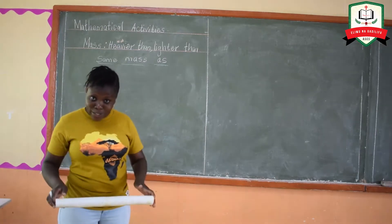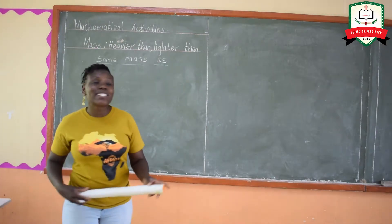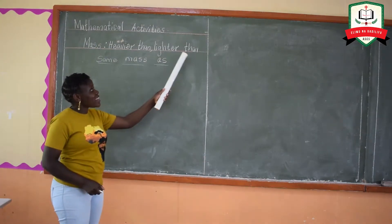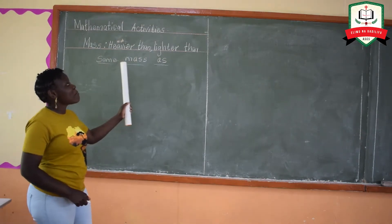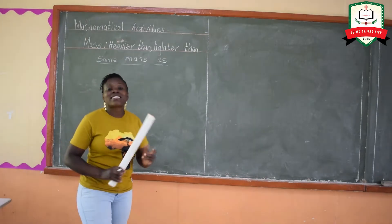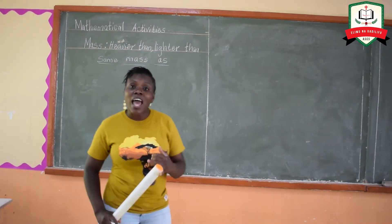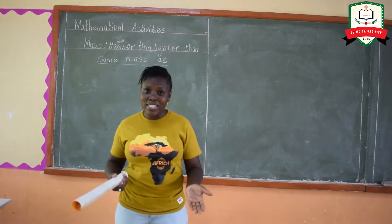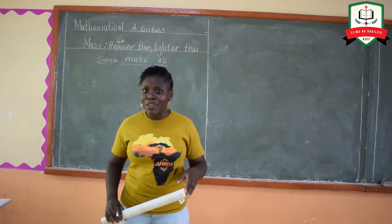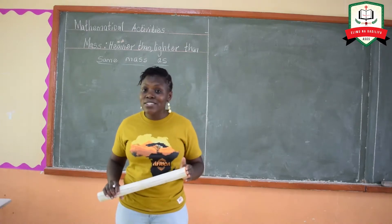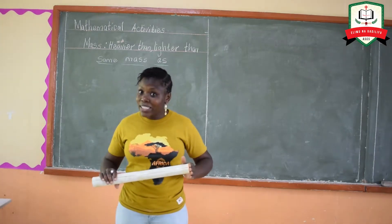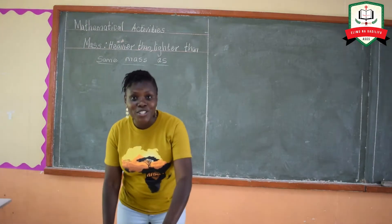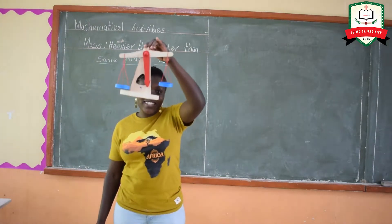In this lesson we are going to look at the words 'heavier than,' 'lighter than,' and 'same mass as.' There are some things which are heavy, others are light, and others might have the same mass if you are comparing them. For us to compare things well and be able to know which one is heavy and which one is lighter, we are going to use this instrument.